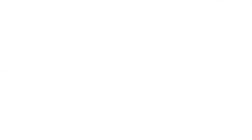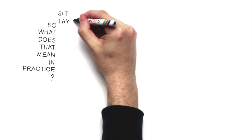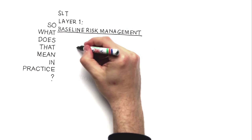So what does that mean in practice? First, the site management team goes through the steps of baseline risk management, layer one. When that's done, we have a clear view of our most significant site risks. Our priority unwanted events.